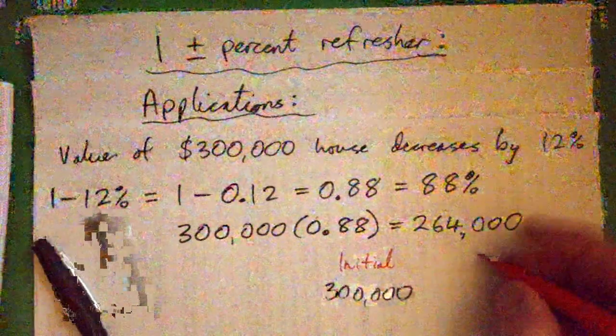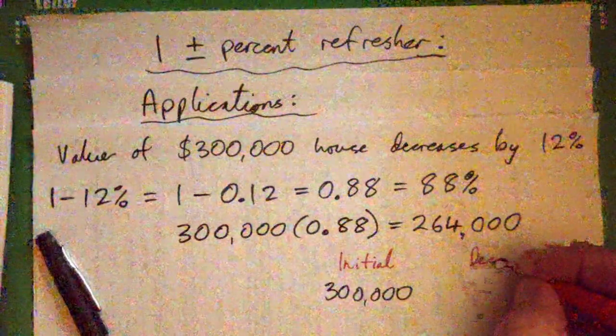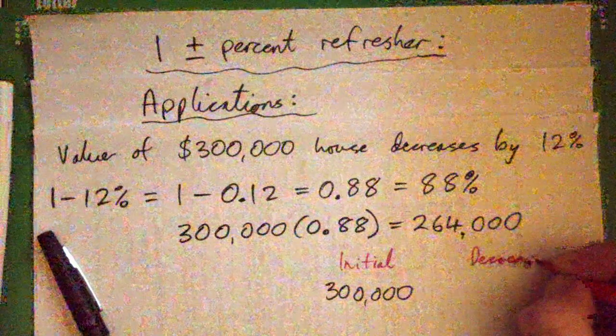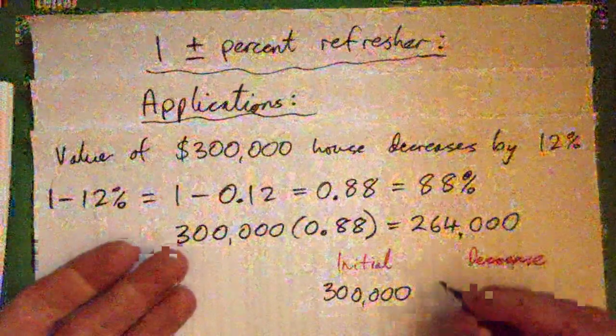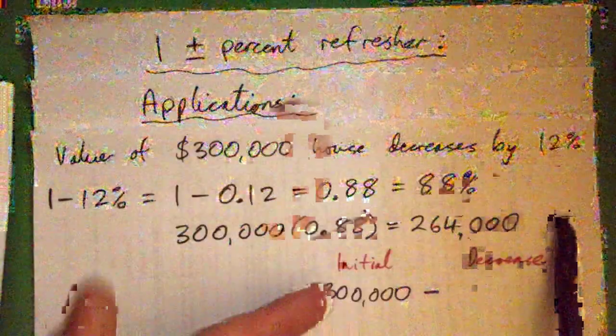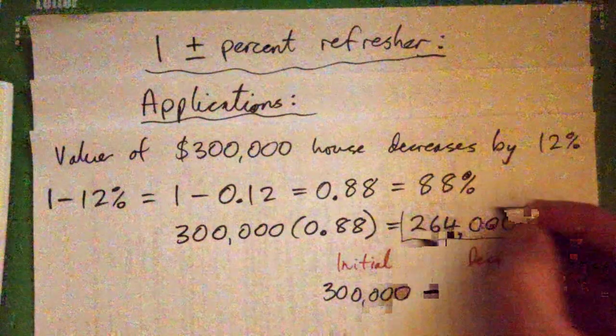And the amount it decreased by... We'll call it the decrease. So, it decreased by something which was 12%, right? And it became 264,000.